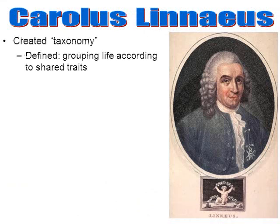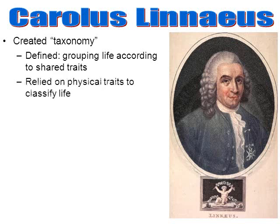Taxonomy was created by Carolus Linnaeus. Taxonomy is the branch of biology where life is grouped and classified according to their shared traits. During the time of Linnaeus, he really only had physical features to depend upon. He and other scientists of his time would look at the physical features of various animals and plants, and they classified life according to their features.